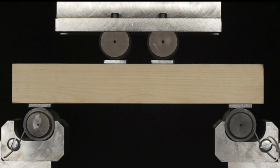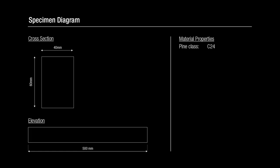This video shows a four-point bending test on a timber beam with the grain running parallel to the beam axis. The beam is made of softwood pine class C24.